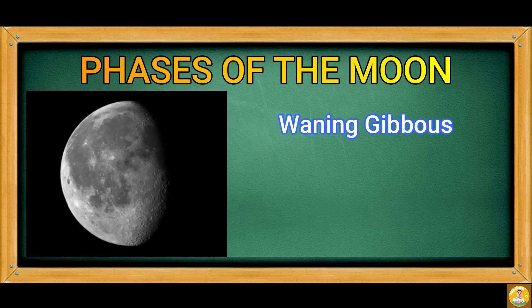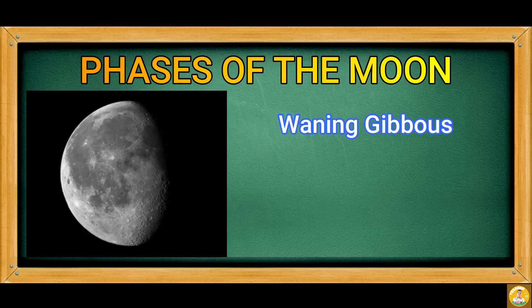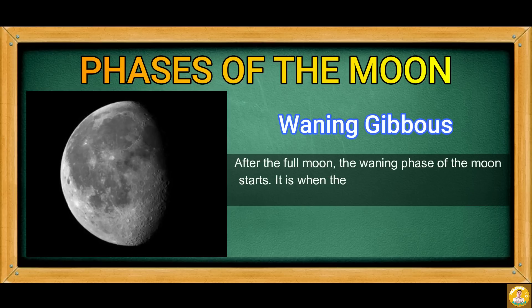Waning Gibbous. After the full moon, the waning phase of the moon starts. It is when the moon appears to be getting smaller each night.